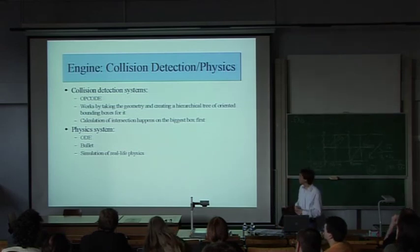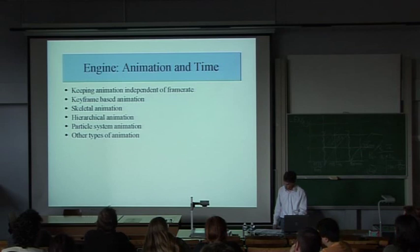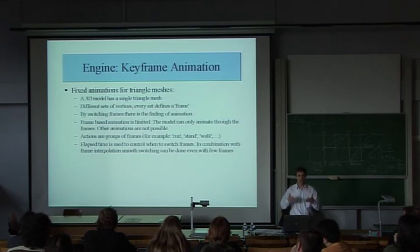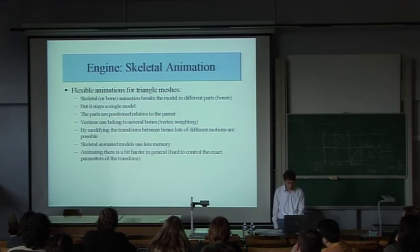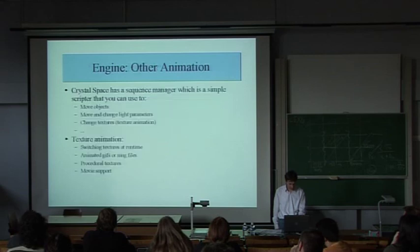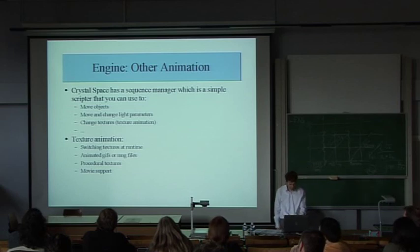We also support collision detection and physics — using Opcode for collision detection and ODE for physics. For animation there are several types: keyframe animation with different frames and positions; skeletal animation, typically used for characters in games; hierarchical animation, where you can put a sword in the hand of an actor; particle animation; and a sequence manager where you can save a kind of script — for example, move that object from here to there for one second, then jump three times, then rotate a bit. And of course texture animation — animated GIFs, movies, animated textures in general.